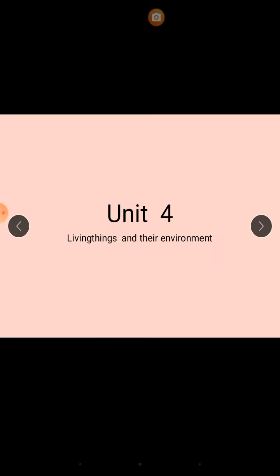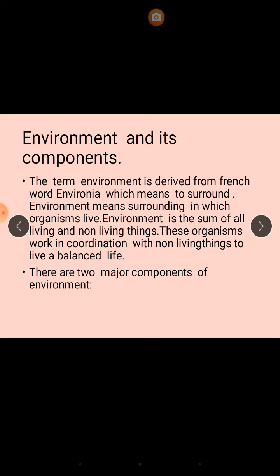Unit number four, we are going to start now: Living Things and Their Environment. The first topic of this unit is components of environment. The term environment is derived from the French word 'environia' which means to surround. Environment means the surrounding in which organisms live. Environment is the sum of all living and non-living things — it means human beings, air, water, and soil all include environment.